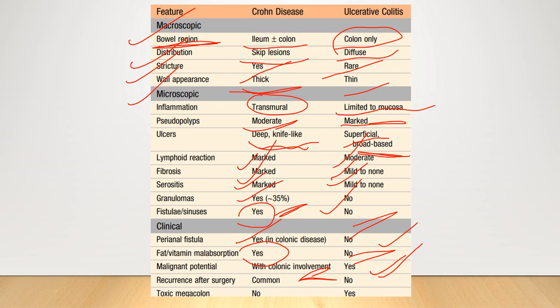Recurrence after surgery is common in Crohn's disease, but after surgery ulcerative colitis does not reoccur. Toxic megacolon is not seen in Crohn's disease but is seen in ulcerative colitis.